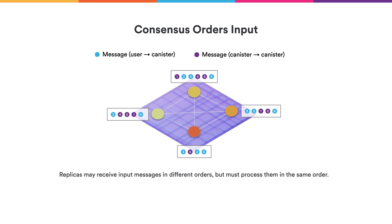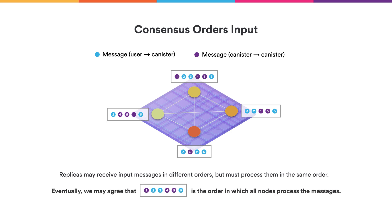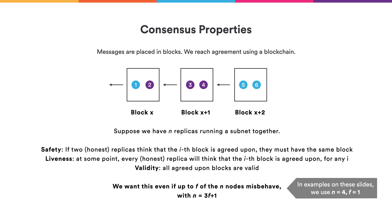The subnet must process different messages, namely messages from users to canisters and from canisters to canisters, and they must all process the same messages in the same order such that they achieve the same state. Each of the replicas that powers the subnet might actually see the messages in a different order. We use a consensus algorithm for all the nodes powering a subnet to agree on an ordering of the messages to process. We're going to reach consensus by using a blockchain.